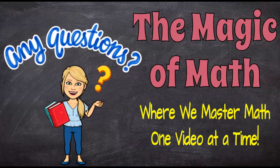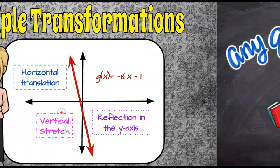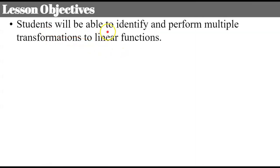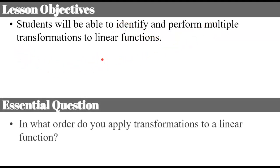Welcome to the Magic of Math where we master math one video at a time. My lesson today is on multiple transformations. This is actually the fourth video lesson in a series on linear transformations. The first video was on horizontal and vertical translations. The second was on reflections in the x and y axis, and the third was on vertical and horizontal stretches and shrinks. So today we're going to put all three of those types of transformations together and learn about applying them in the correct order. Our objective: we will be able to identify and perform multiple transformations to linear functions.